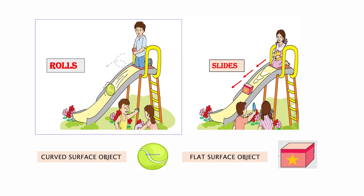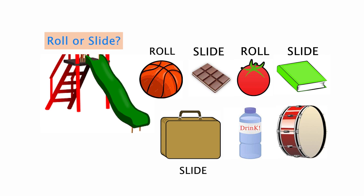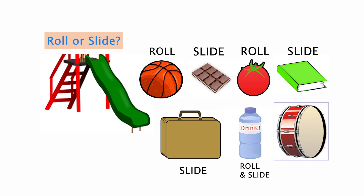The ball rolls. A ruler or scale will slide due to its flat surface. The toy box would also slide down the incline. A briefcase will again slide. A bottle of water can both roll and slide — you can try it at home! Same is for the drum: if pushed with its curved surface touching the ground, it will roll; if pushed from its flat surface, it will slide. Can you think of any more objects which can both roll and slide?